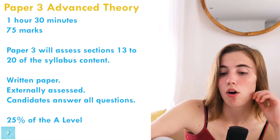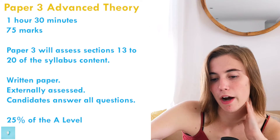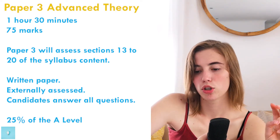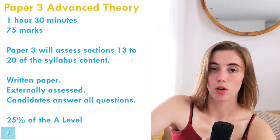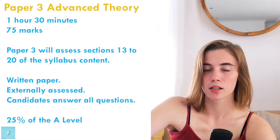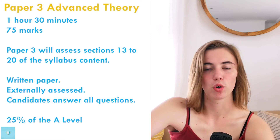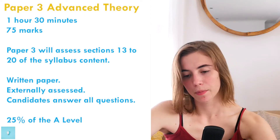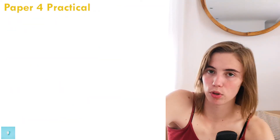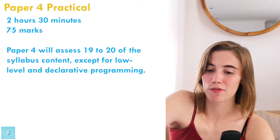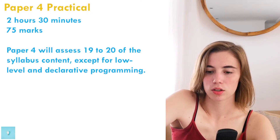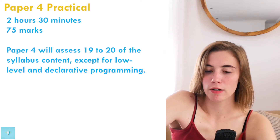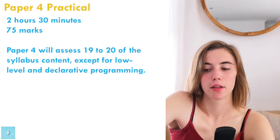Now for the assessment overview — the papers you'll be writing for A-levels. Paper three is the advanced theory paper: one and a half hours long, 75 marks, assessing syllabus sections 13 to 20. It is written on paper with a pen and counts for 25% of your A-level mark, since there are four papers total.